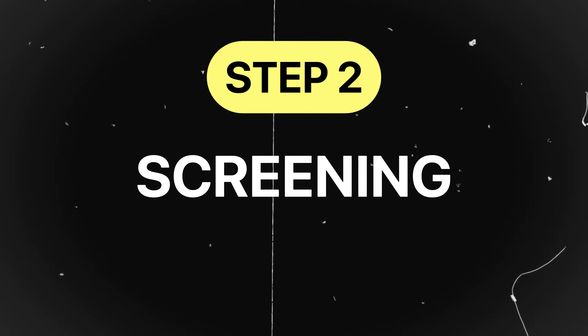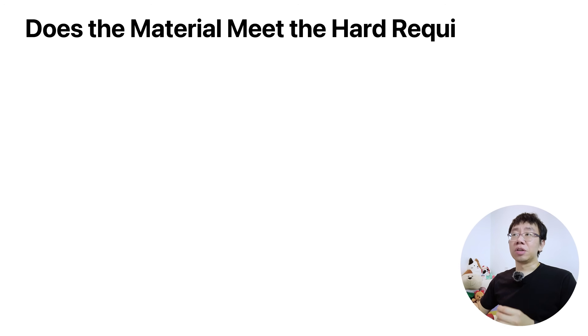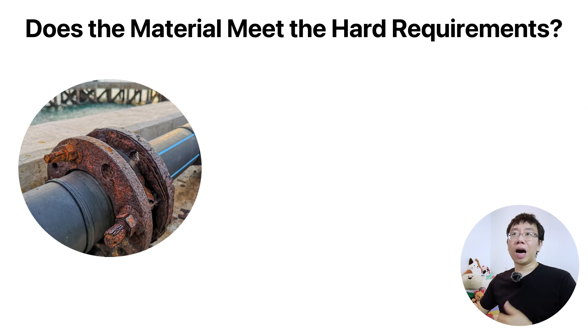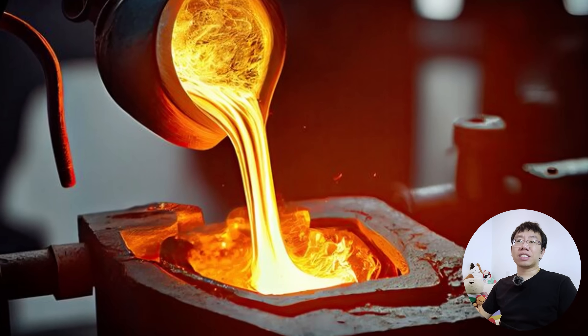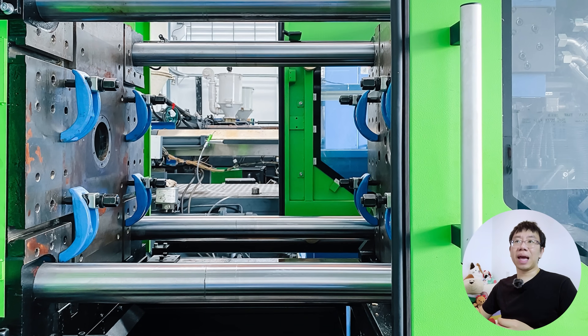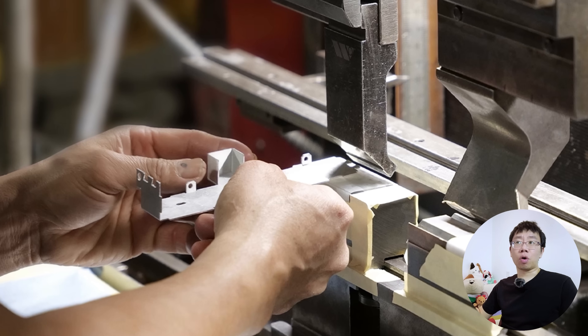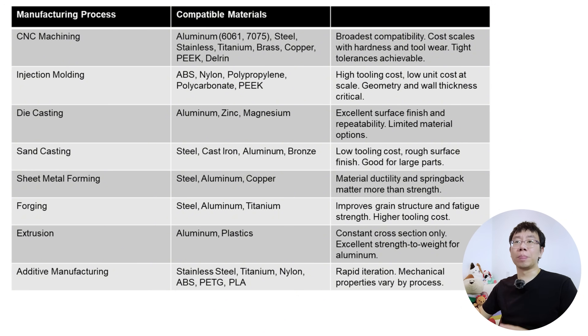Step two is screening — this is binary. Does the material meet the non-negotiables? If the component operates in a corrosive saltwater environment, non-treated carbon steel is screened out immediately regardless of its strength. Manufacturing constraints eliminate a large portion of the material landscape early as well. Casting, forging, machining, injection molding, additive manufacturing, and forming each impose material compatibility requirements. A theoretically ideal material that cannot be sourced reliably is also not viable.